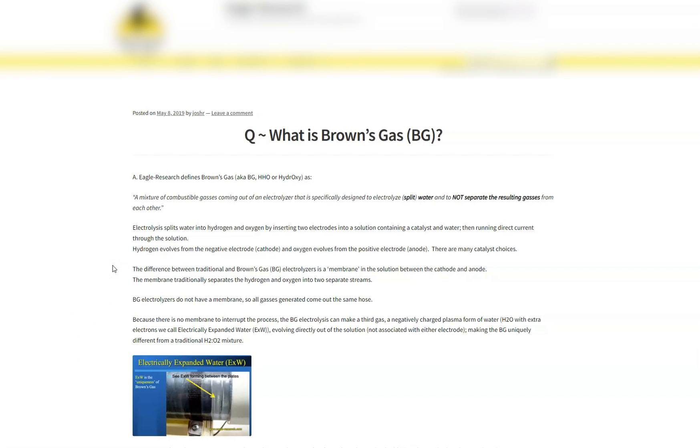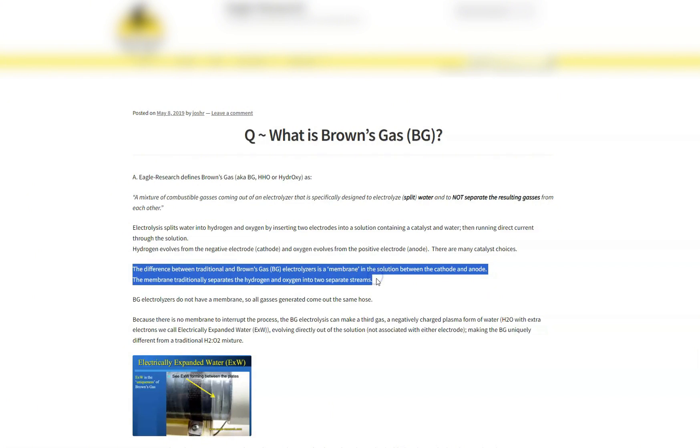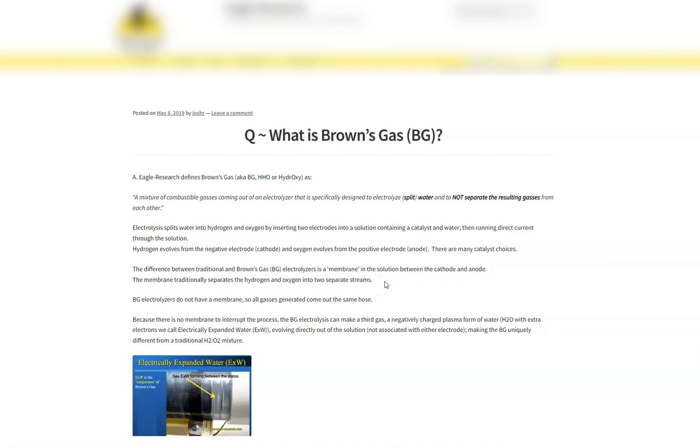It says right here the difference between traditional Brown's gas electrolyzer is a membrane and the solution between the cathode and the anode. The membrane traditionally separates the hydrogen and oxygen into two separate streams. In a PEM electrolyzer, you're going to have a membrane in between that separates the oxygen to one side and the hydrogen to the other side. In an alkaline electrolyzer, they're going to be mixed together. Brown's gas electrolyzers do not have a membrane, so all gases generated come out of the same hose.